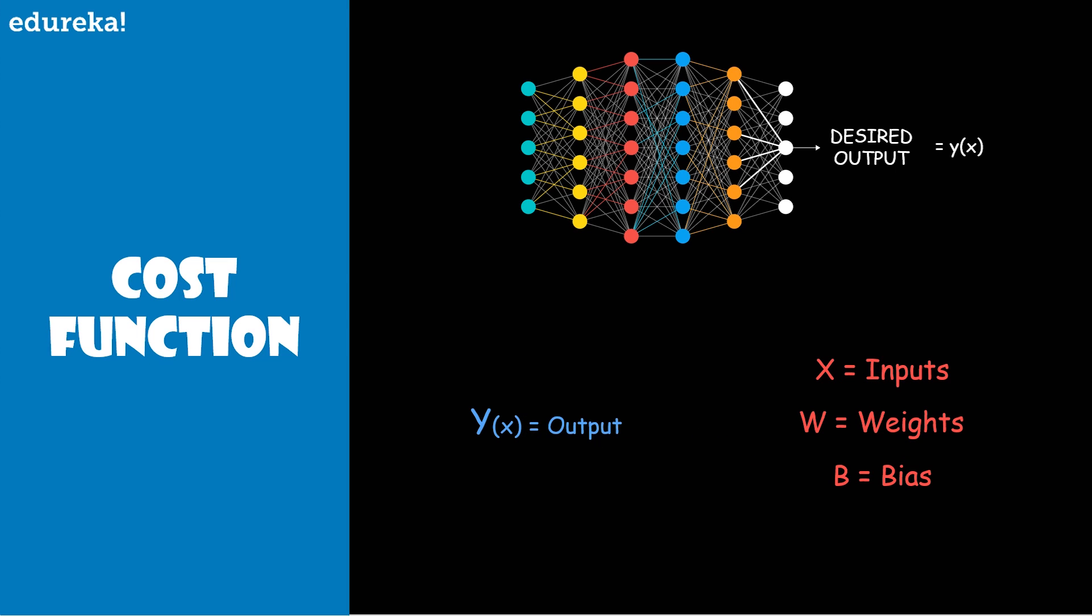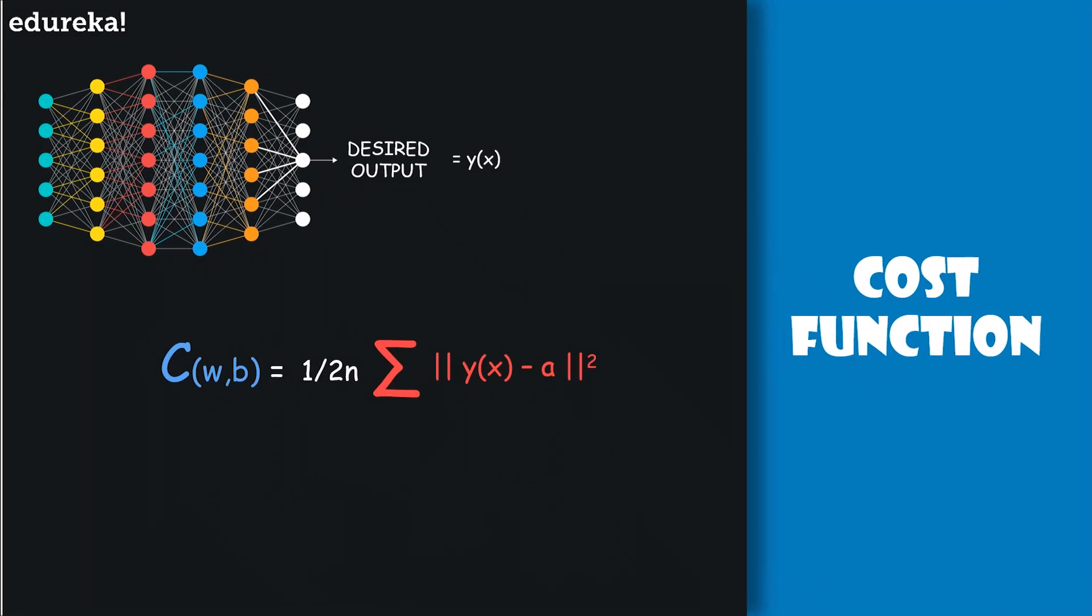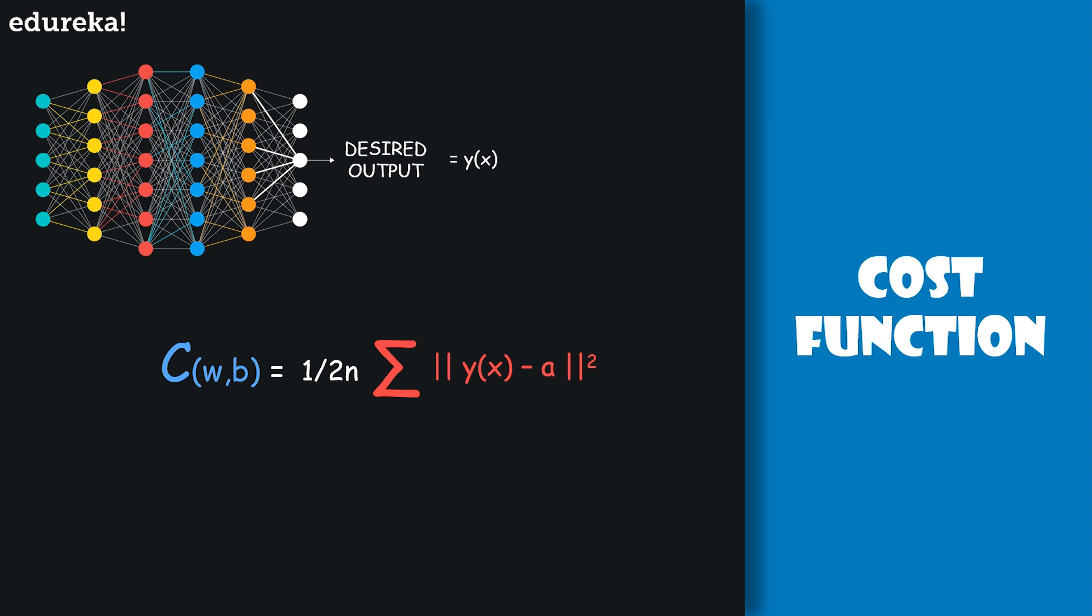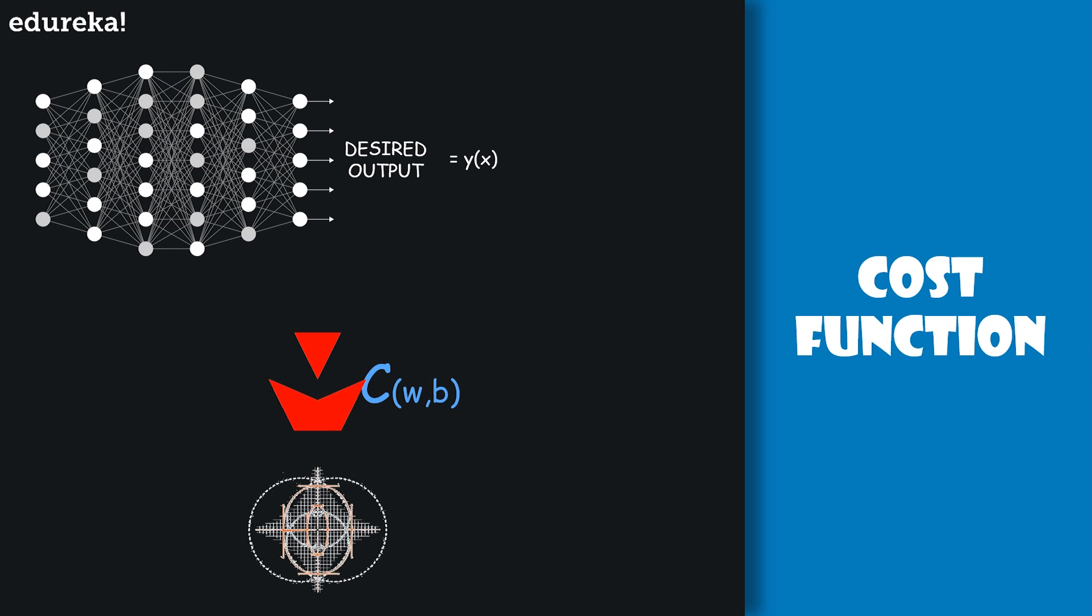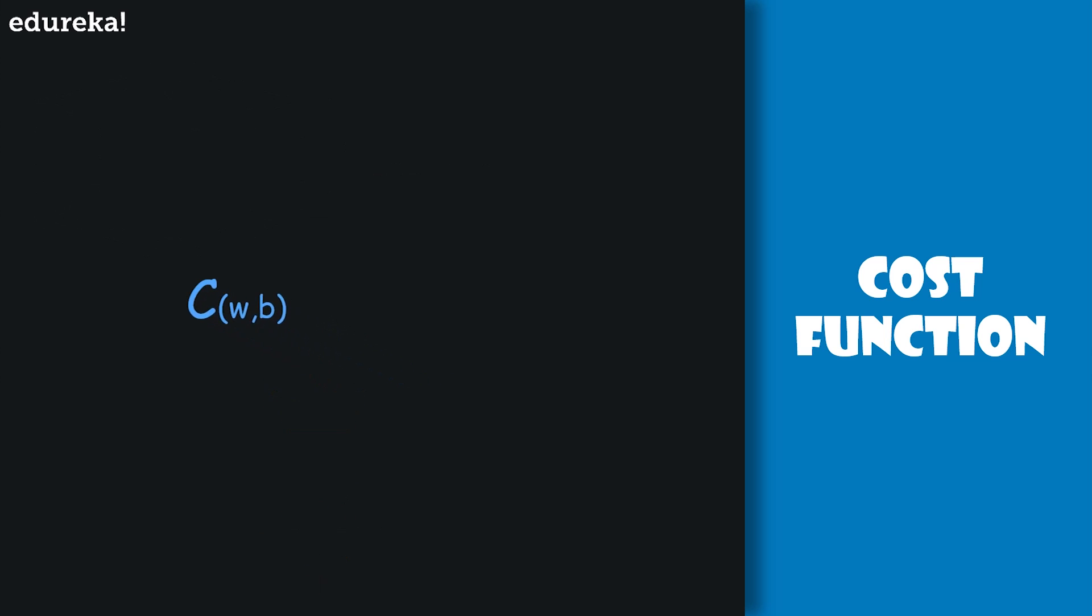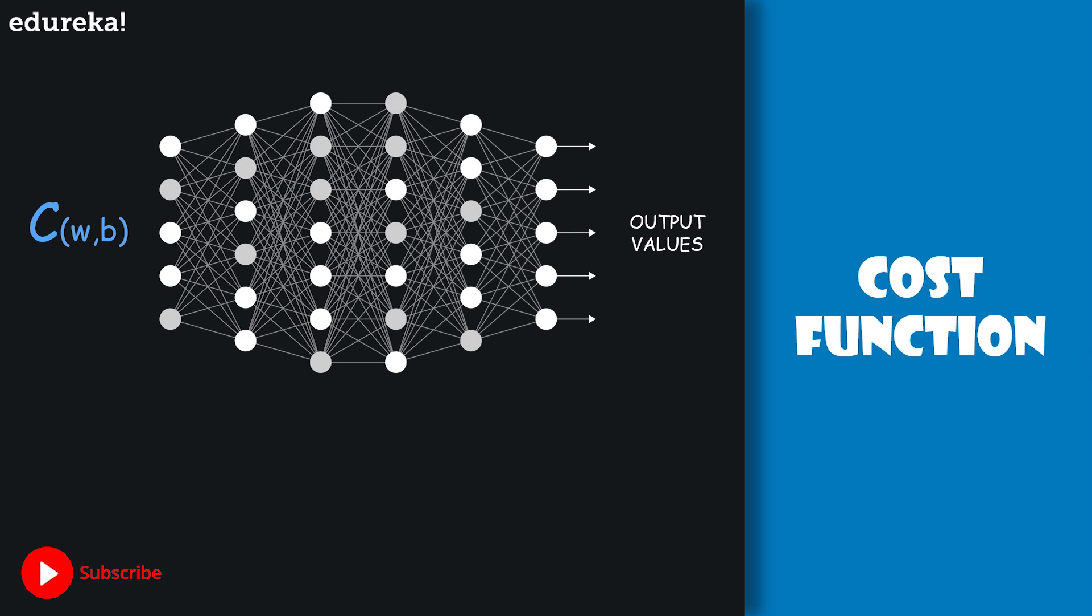Of course the output depends on the values of X, W and B, which are the inputs, weights and biases. The cost becomes small, that is the function C tends to 0, precisely when Y of X is approximately equal to the output for all the training inputs X. So our training algorithm has done a good job if it can find the weights and biases so that the cost is equal to 0. By contrast, it's not doing so well when the cost is large. So the aim of our training algorithm will be to minimize the cost as a function of the weights and biases. In other words, we want to find a set of weights and biases which makes the cost as small as possible.